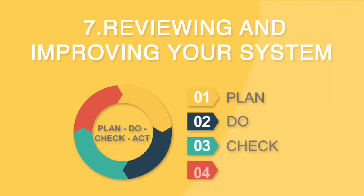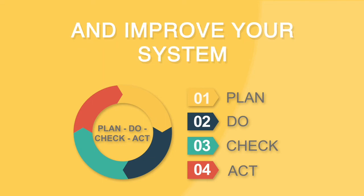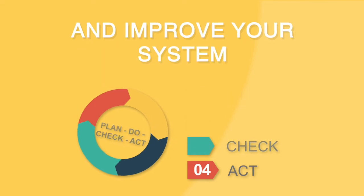Reviewing and improving: auditing the records will help ensure processes were followed, and you should continually look for opportunities in your processes to see where you can improve your system.